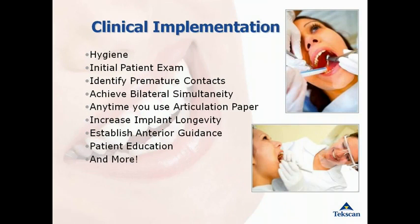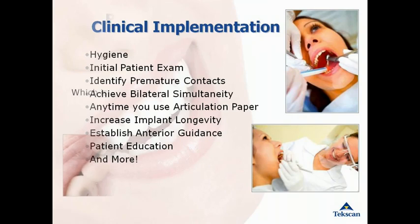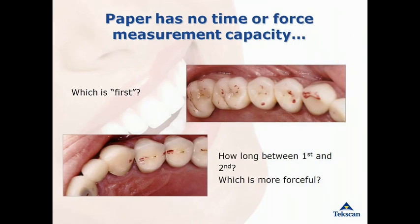T-Scan technology is specifically designed for bite analysis to expand your practice in a wide range of applications. Find the first point of contact accurately and quickly with the T-Scan. Save time by getting it right the first time and eliminate the guesswork that goes along with articulating paper. T-Scan provides a useful clinical application in identifying and alleviating premature occlusal contacts. You now have the ability to identify which tooth hit first. The typical means of looking at occlusion — such as articulating paper, paste, wax, and foil — do not provide you with any information on timing and force of occlusal contacts.